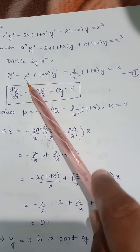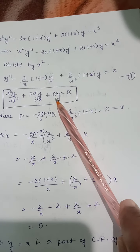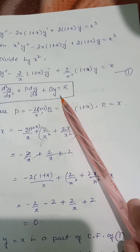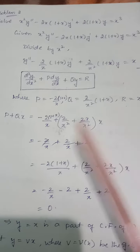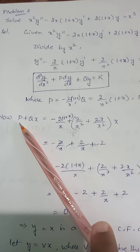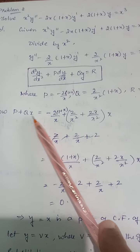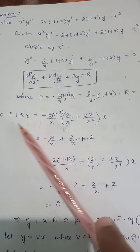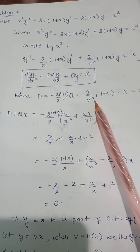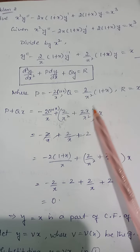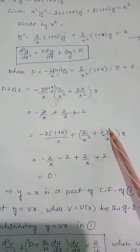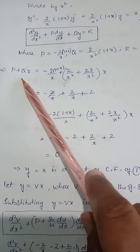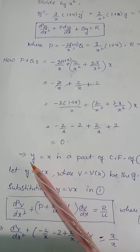Comparing with the standard form, we get P = -2/x · (1+x), Q = 2/x² · (1+x), and R = x. Then we check the condition P + Qx: substituting P and Q values, P + Qx gives 2/x²·(1+x) into x, and simplifying this we get 0.